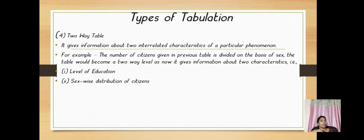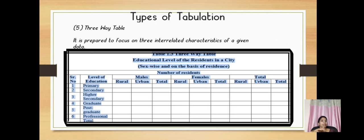Two way table. It gives information about two interrelated characteristics of a particular phenomena. For example, the number of citizens given in a previous table is divided on the basis of sex and the table would become a two way table as now it gives information about two characteristics. Example: level of education and sex wise distribution of citizens.